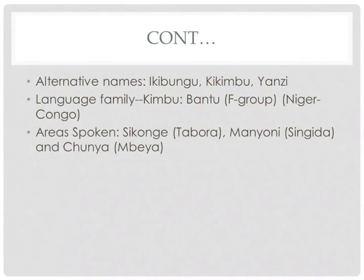Kimbu is spoken in three major regions of Tanzania: Tabora to the west, Singida in the center, and Chunya, which is in the southern highlands. In these three regions, Kimbu is not spoken across a large area — it is only one district of each region where Kimbu is spoken. In Tabora, you can find Kimbu speakers only in Sikonge; in Singida, you'll find them in Manyoni district; while in Mbeya, you'll find them in Chunya district.